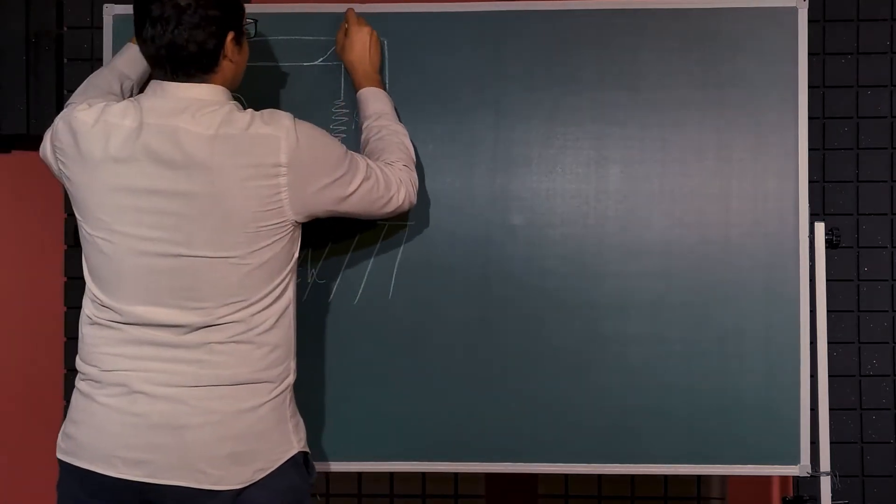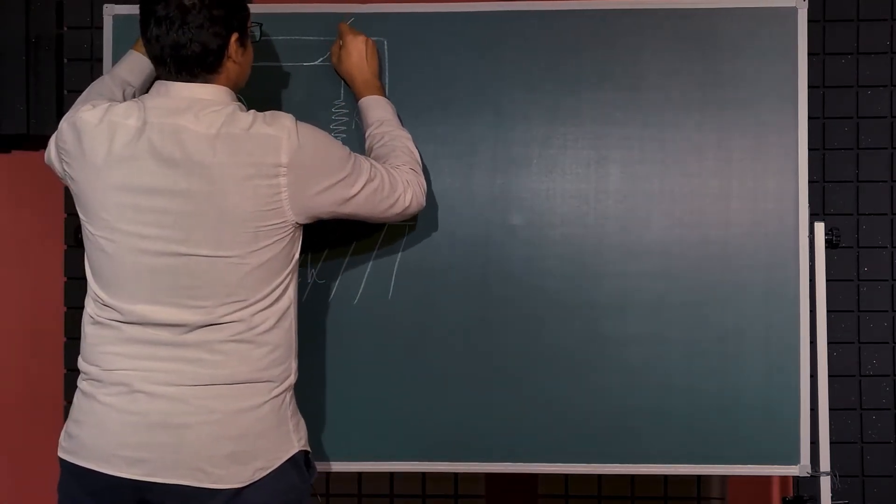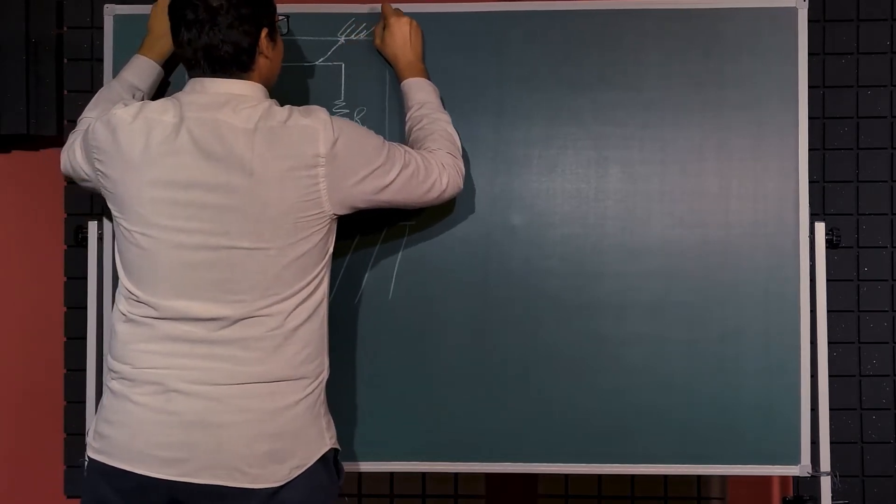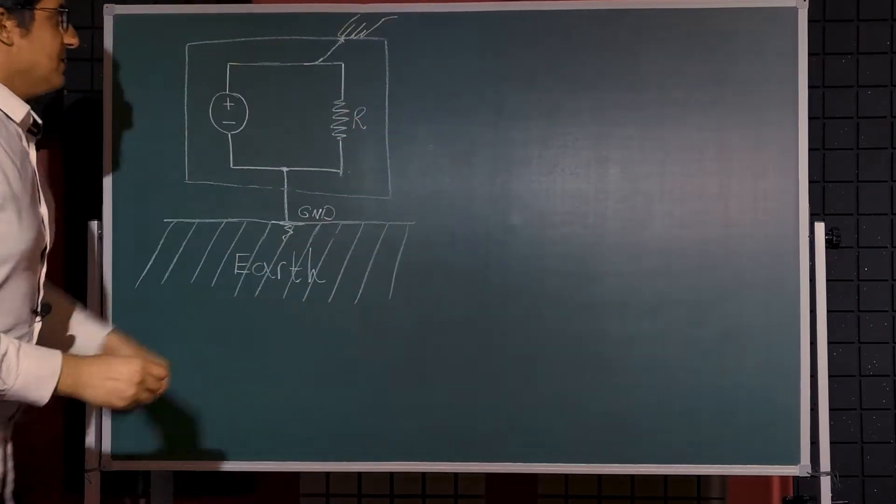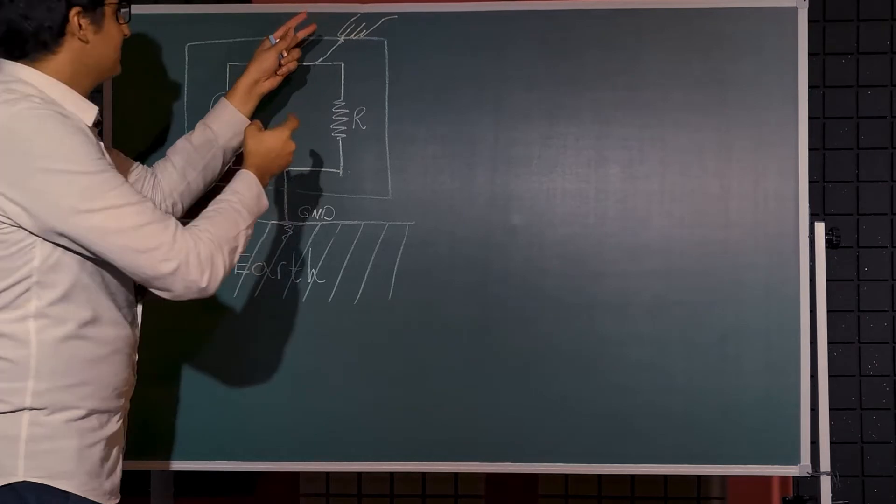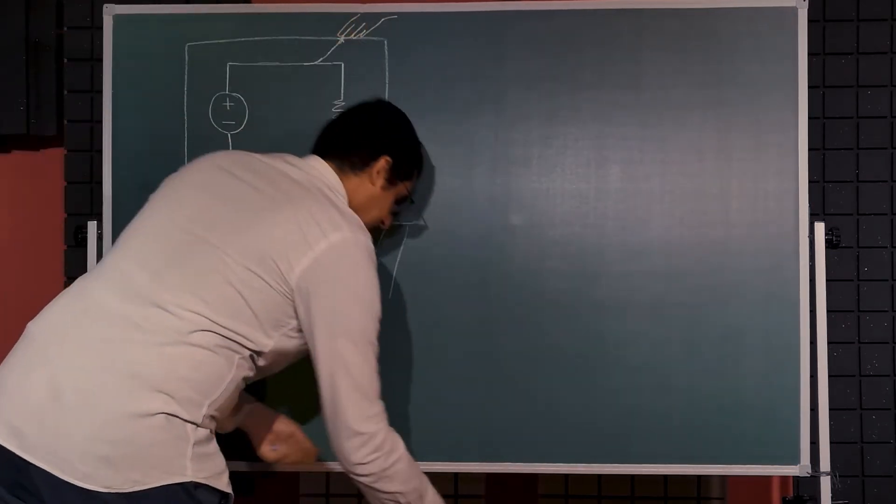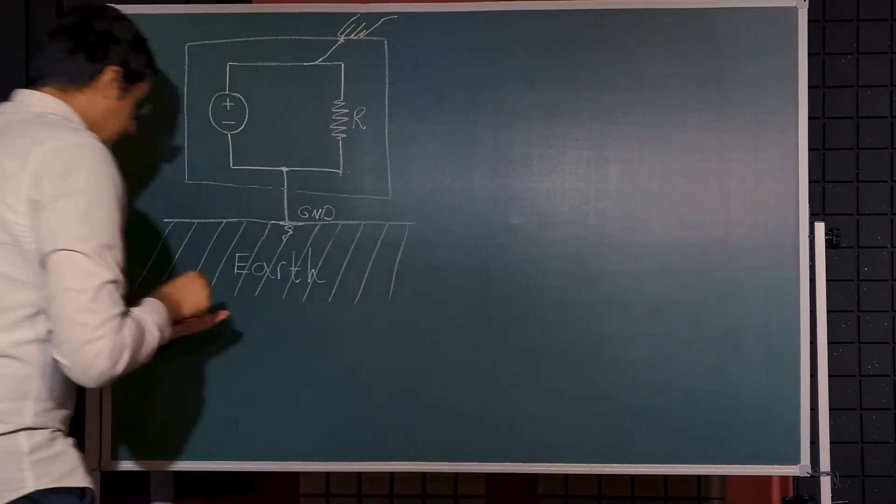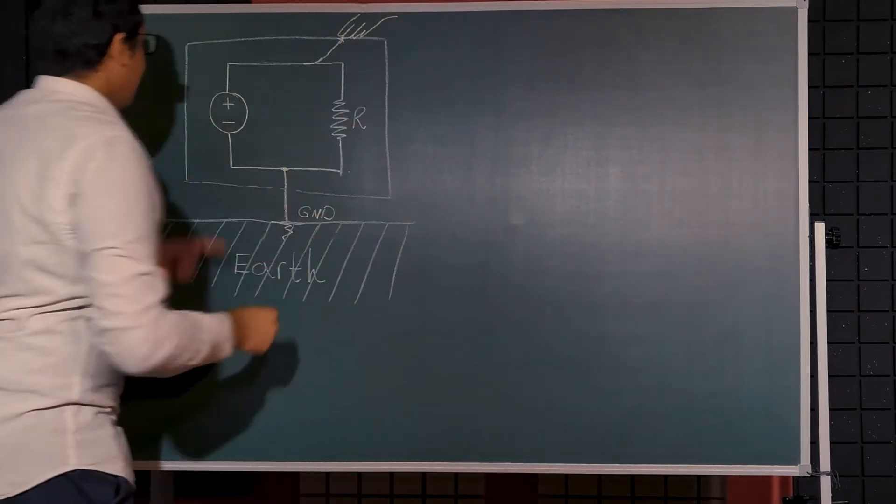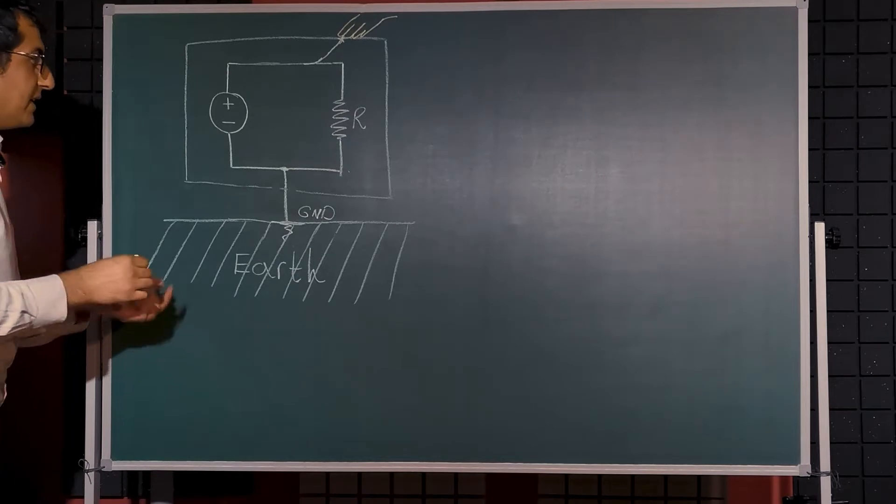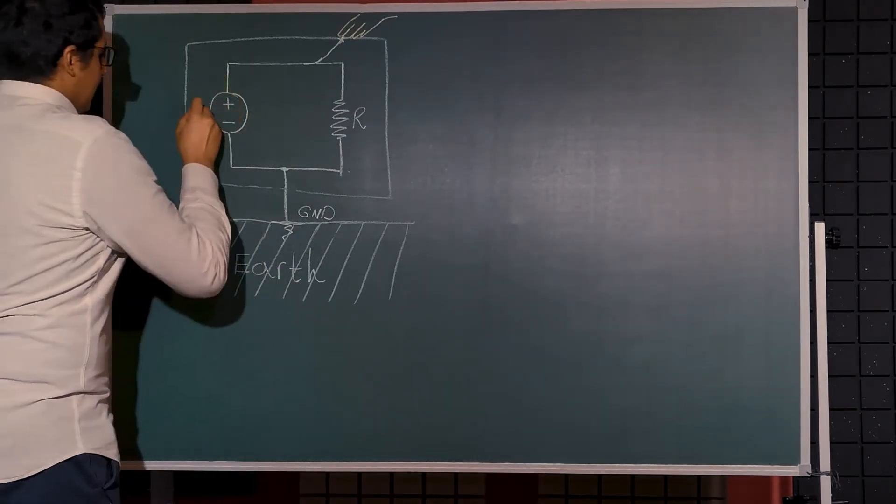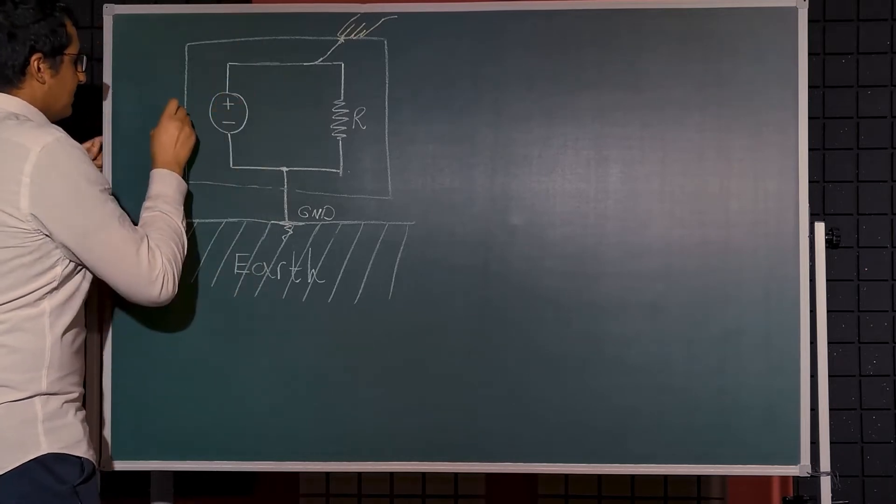If somebody touches this, actually I'm really not good at drawing fingers, but if somebody touches this, what happens? Yes, he or she got shocked because now our current will pass through his body, provided that if our DC voltage is extremely high, let's say 1000 volts.